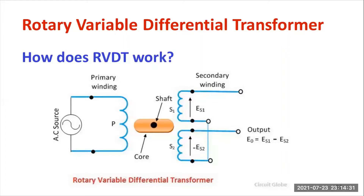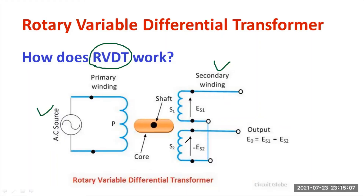Let me explain the working of RVDT briefly. The RVDT comprises a primary winding supplied with an AC source, and a cam-shaped core with a shaft pivoted to it. The shaft is a mechanical element directly connected to the cam-shaped core. The secondary winding is split into S1 and S2, both connected in series but opposite to each other, creating a phase shift of 180 degrees out of phase. The output voltage is the difference between ES1 and ES2 — that is the differential output.